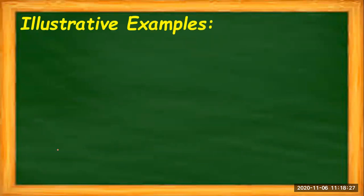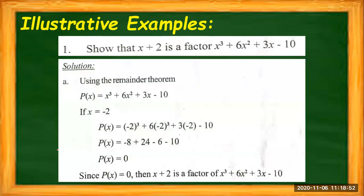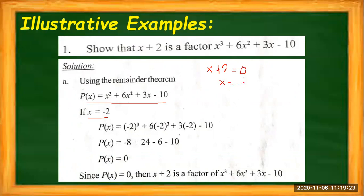Let's have some examples. We are going to show that X plus 2 is a factor of X³ + 6X² + 3X − 10. We need to show that the remainder of that function when divided is 0 — if the remainder is 0, then X plus 2 is automatically a factor. We can use the Remainder Theorem or direct substitution. P(x) = X³ + 6X² + 3X − 10, and the value of X is equal to negative 2, because the given is X plus 2 and we equate it to 0: X + 2 = 0, so X = −2.